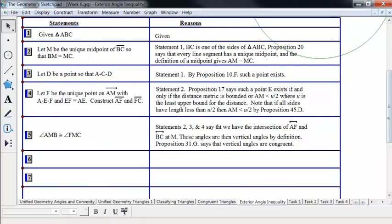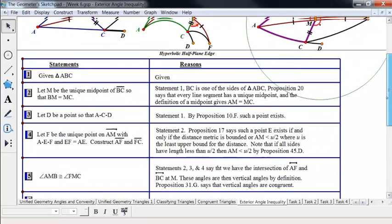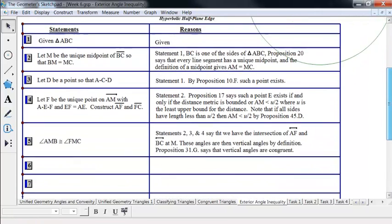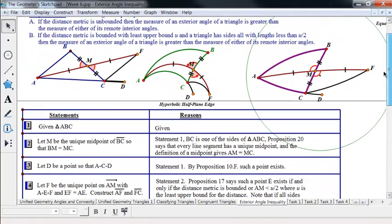So now we know that we have some vertical angles here. So BMA and CMF are vertical angles, whichever picture you're looking at, and so they are congruent. So we've got a pair of congruent angles that are vertical angles.